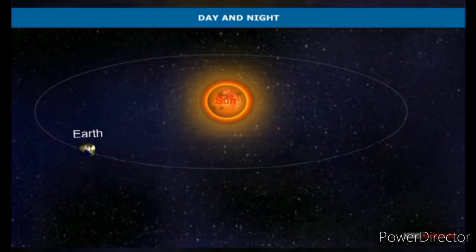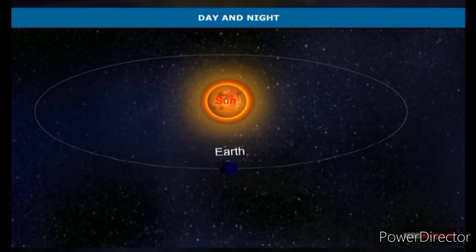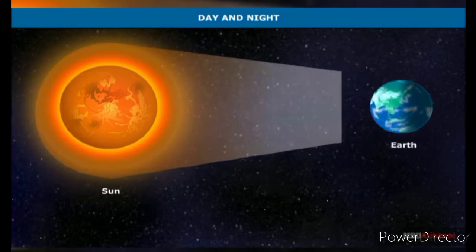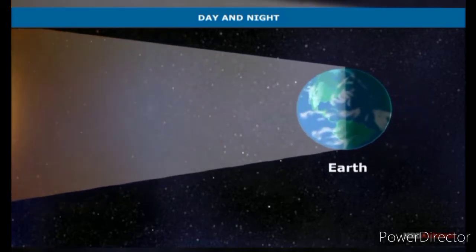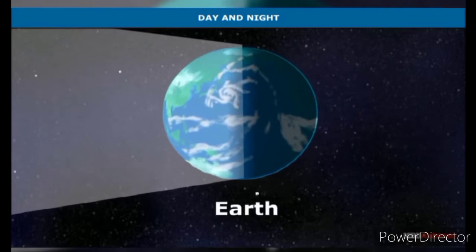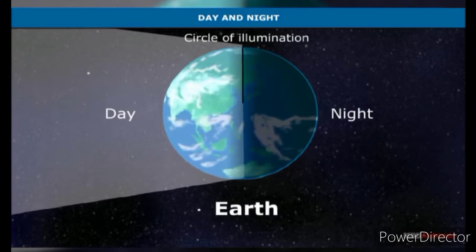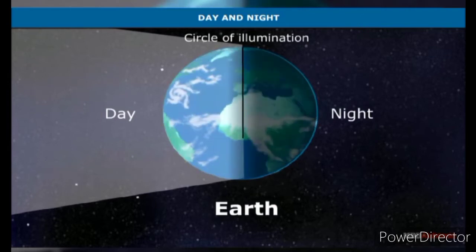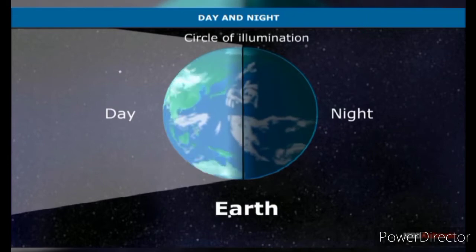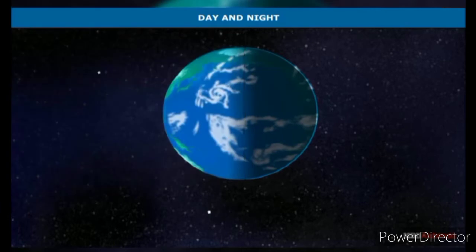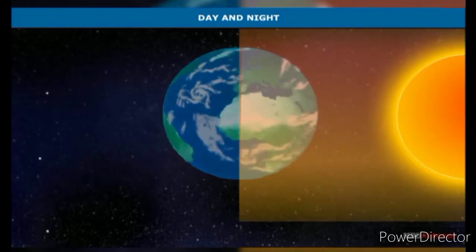The part of the earth that faces the sun is lighted. Being spherical in shape, the earth completes one rotation in 24 hours and moves from west to east. Therefore, no place on earth receives sunlight constantly. The circle which divides the earth into its lit and unlit halves is known as the circle of illumination. As the area in the zone of darkness comes nearer to the zone of illumination, there is diffused light.